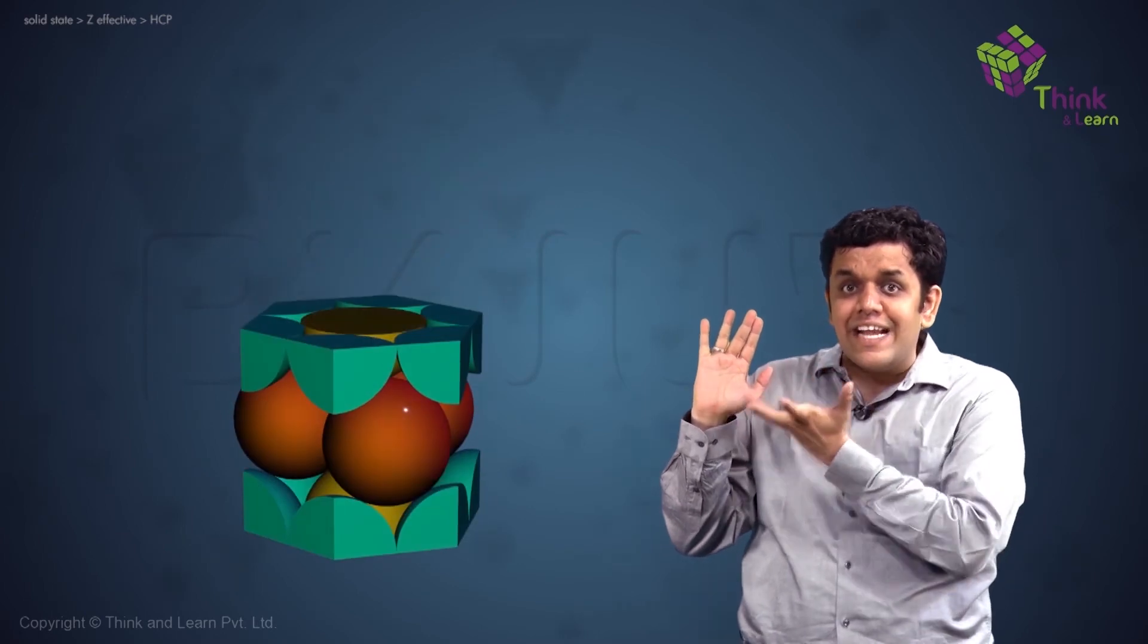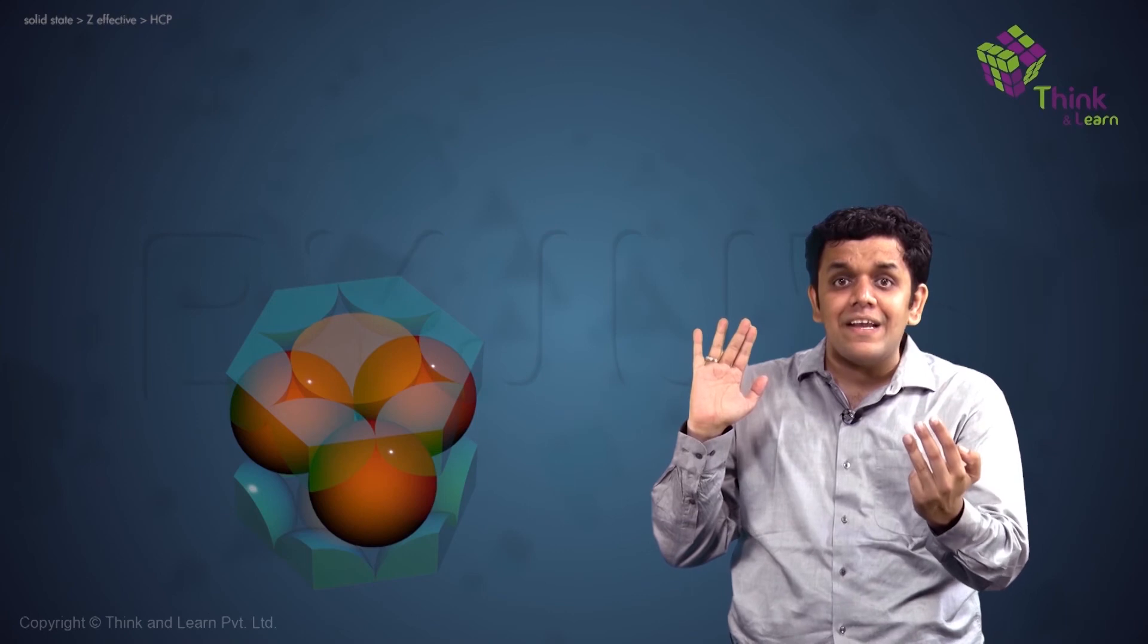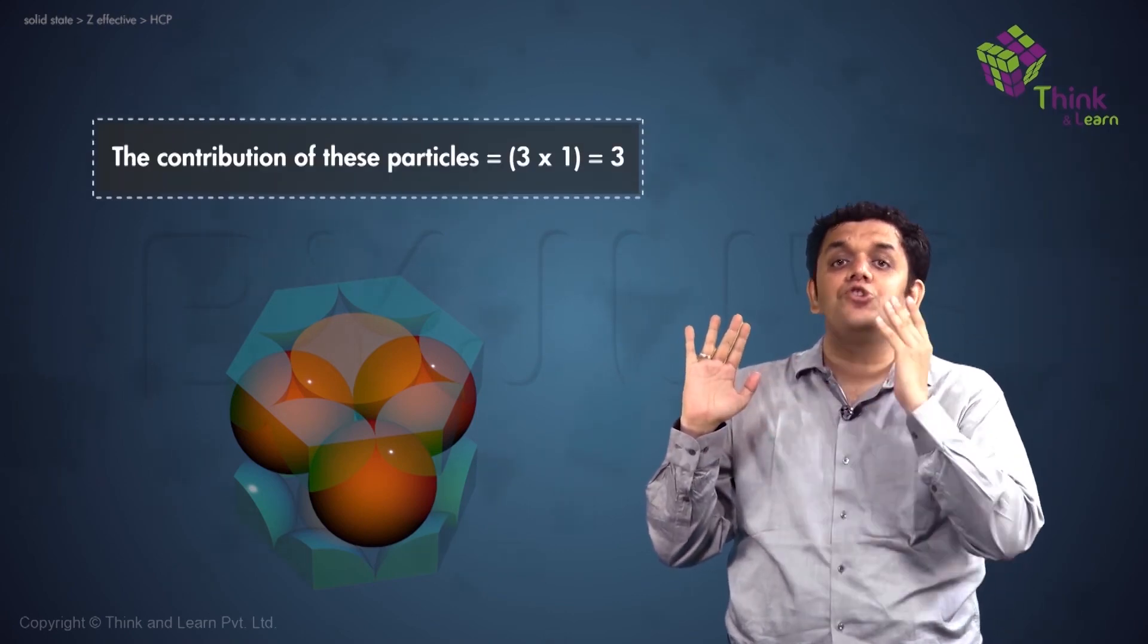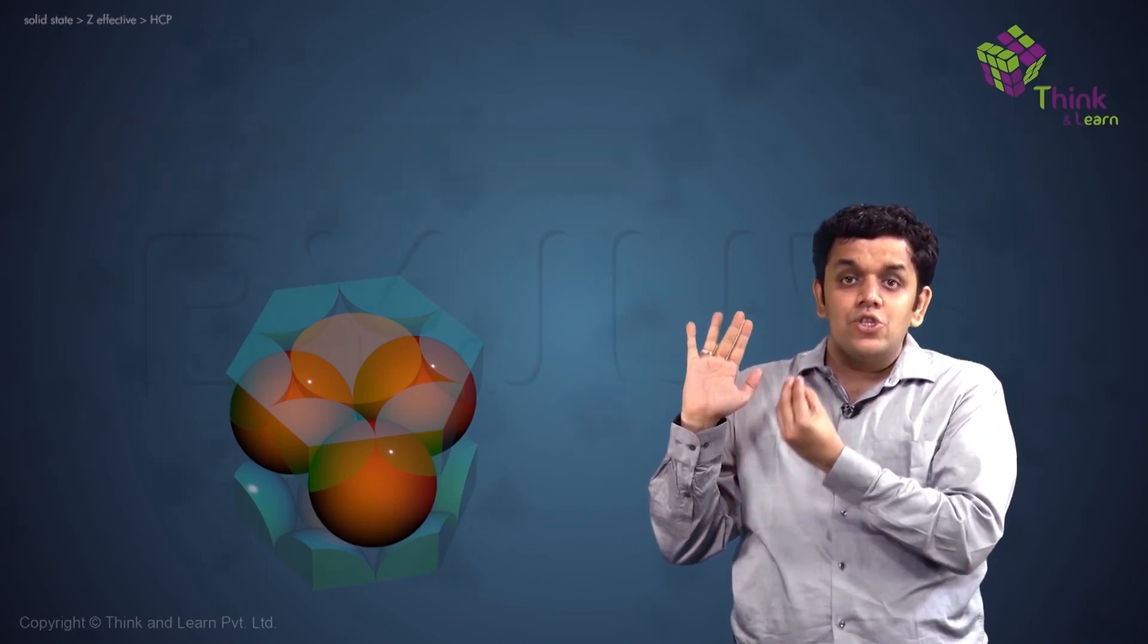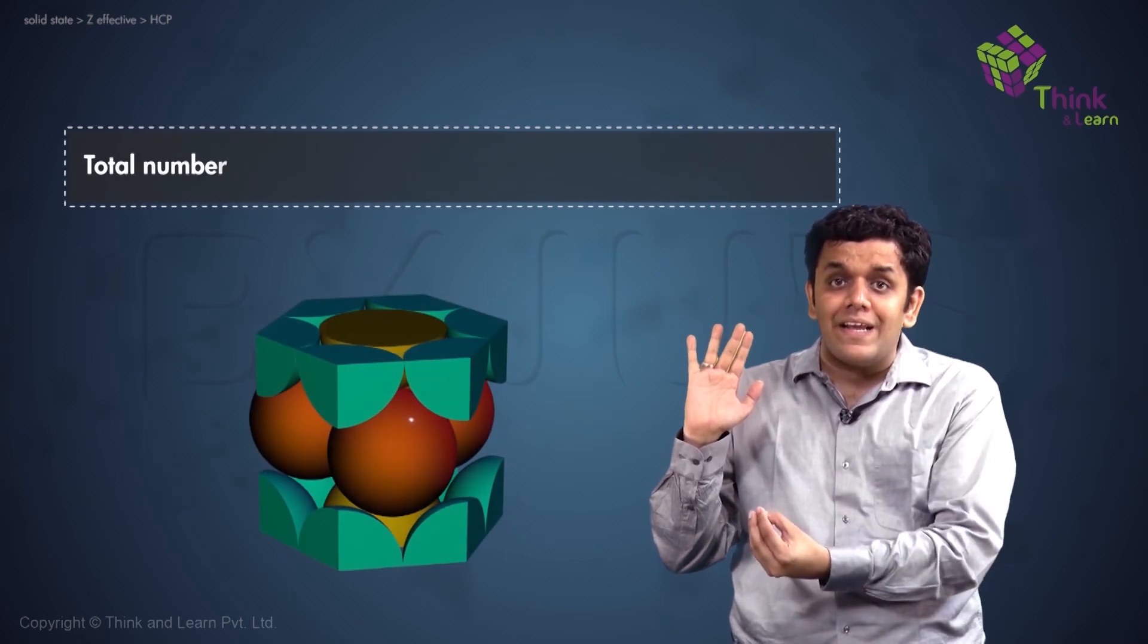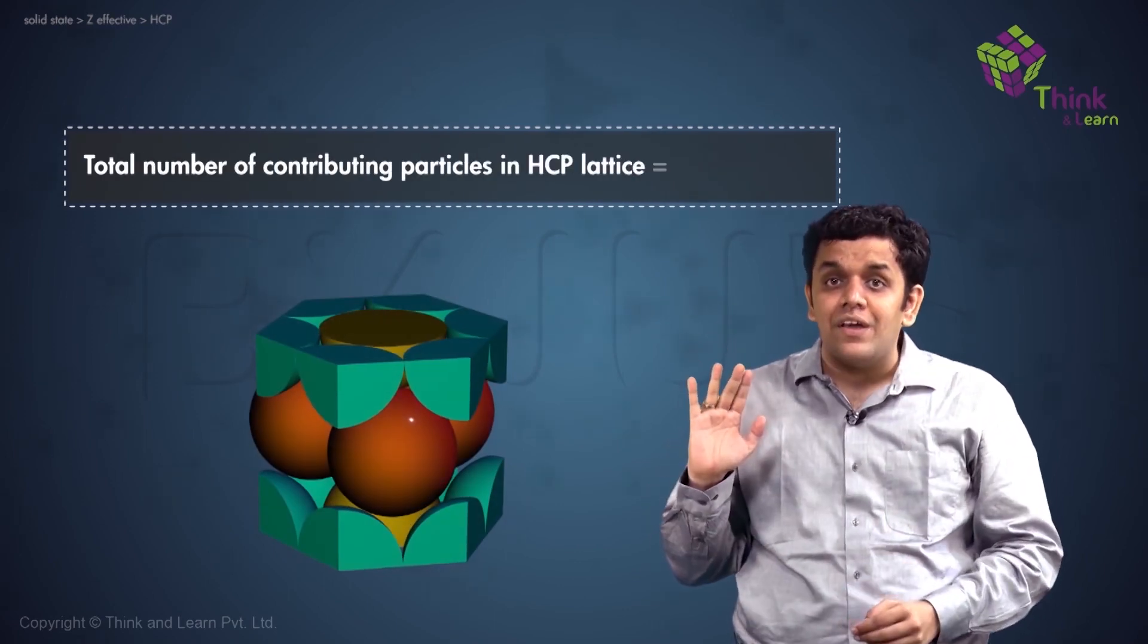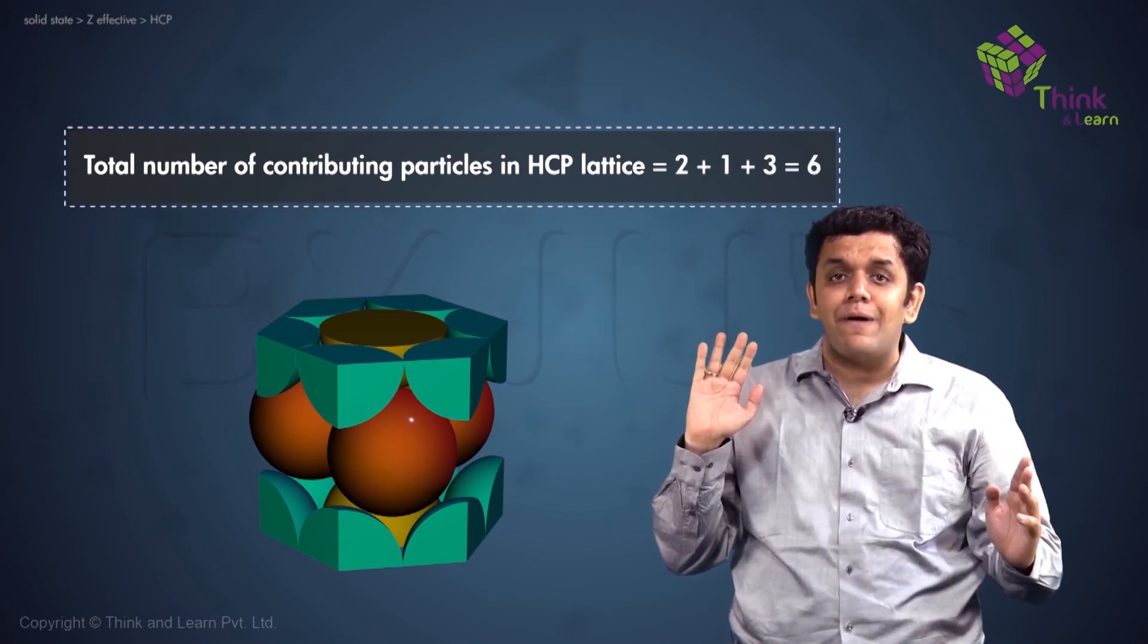Now let us look at the center of the hexagon. There are three particles. Now these three particles are completely towards unit cell U1. Their contribution is complete towards unit cell U1 only because they are located at the center of the unit cell. So therefore, the total number of particles Z effective for HCP lattice is going to be two plus one plus three, which comes to six particles per unit cell.